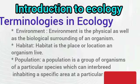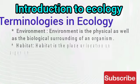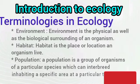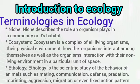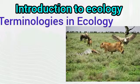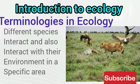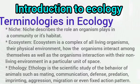Habitat is where the organisms actually inhabit or stay. Population is a group of organisms of the same species that can interbreed in a particular geographical location at a given time. The role an organism plays in its community or habitat is regarded as the niche. Ecosystems comprise living organisms and their physical environment, and all their interactions at a particular place.